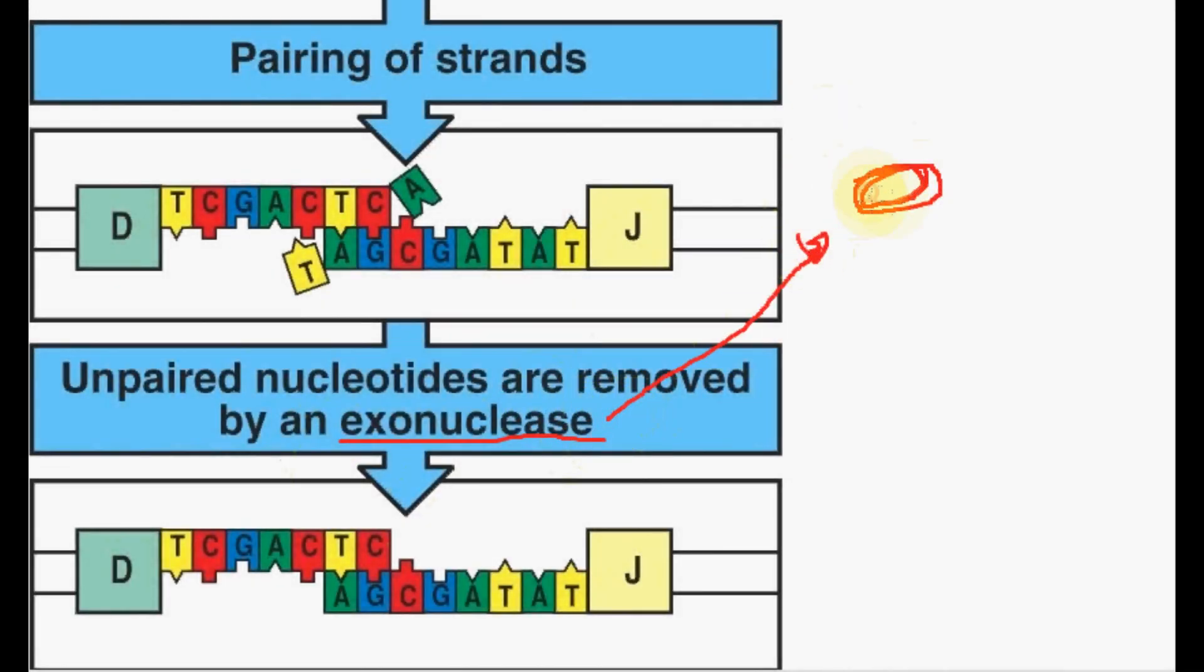The exonuclease is an enzyme that clears the nucleotides from the end of the polynucleotide chain through the use of a hydrolyzing process. This enzyme also helps improve proofreading.